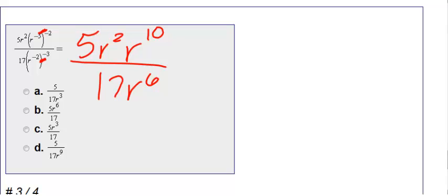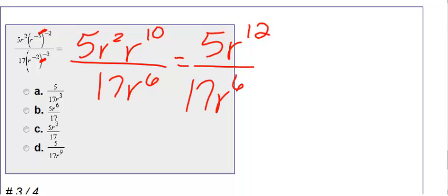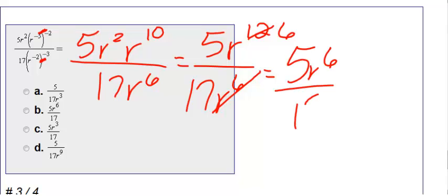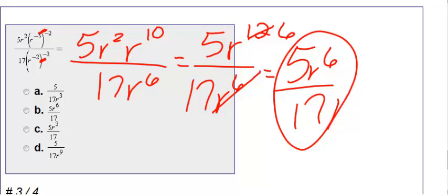I don't need to move anything around. Now I'm looking at the top — I have r to the second and r to the tenth. I can combine those to make r to the twelfth by adding the exponents. I'm still not done because I can simplify: I have r to the twelfth on top and r to the sixth on the bottom. I can take six away, leaving five r to the sixth on top and seventeen on the bottom. Therefore, we get choice b as my answer.